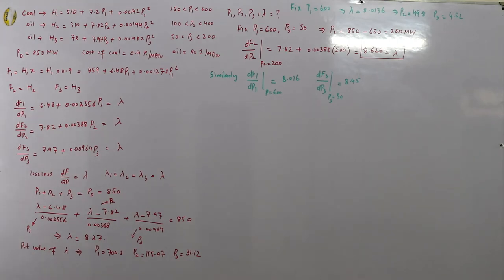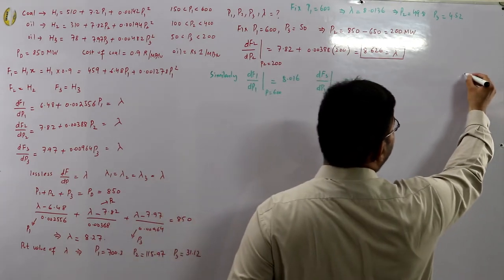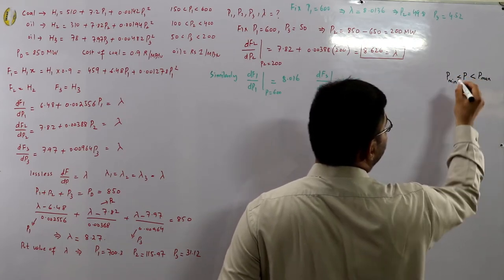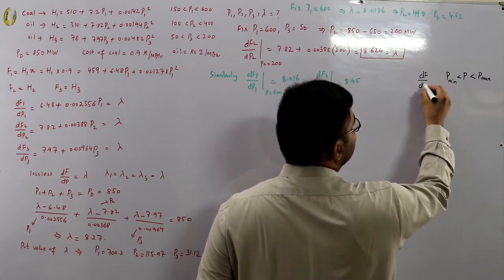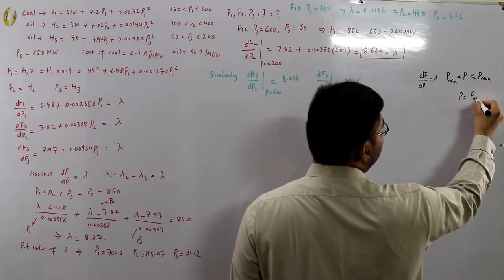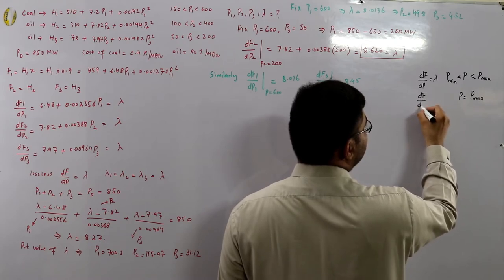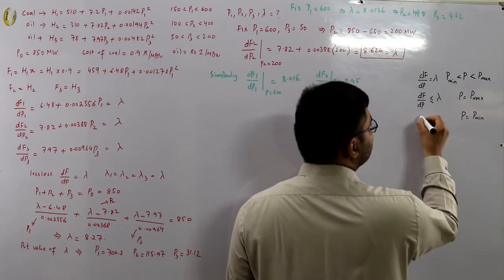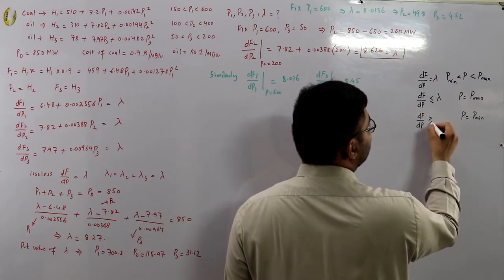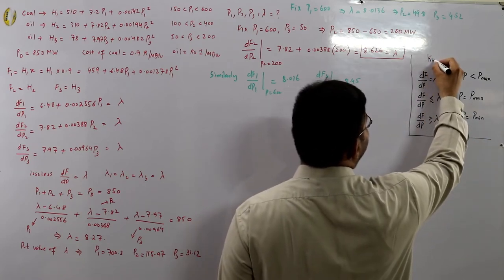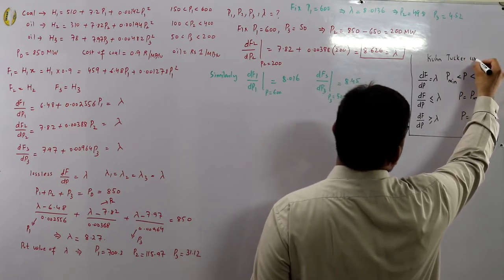Now apply the Kuhn-Tucker conditions: if power dispatch is within the economical limit, df/dp = λ; if at maximum, df/dp ≤ λ; if at minimum, df/dp ≥ λ. These are the conditions that must be satisfied to confirm a valid optimal dispatch.